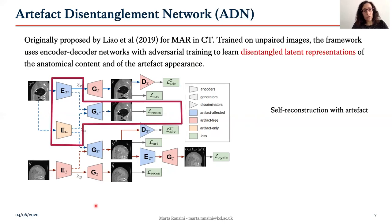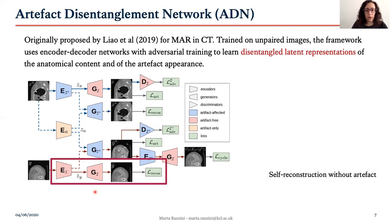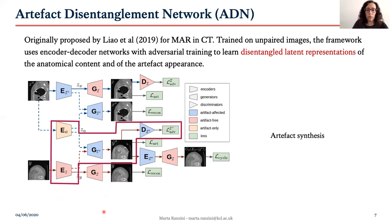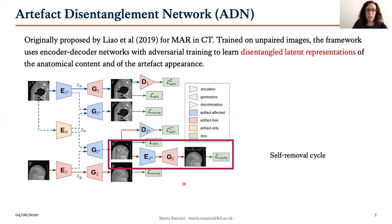On a self-reconstruction pathway, the anatomical and the artifact latent spaces are recombined back together in the corrupted generator to reconstruct the original input. Similarly, a clean image from a different subject is encoded and subsequently decoded with the artifact-free generator. At the same time, it also traverses an artifact synthesis pathway where it is joined with the encoded artifact from the other subject to produce a synthetically artifacted image, aided again by another discriminator. Finally, a cycle consistency is introduced by removing the synthetically added artifact to go back to the original clean input.